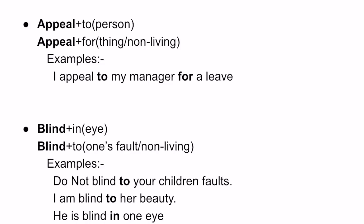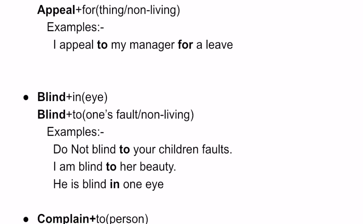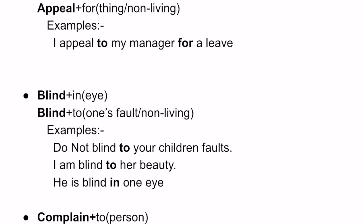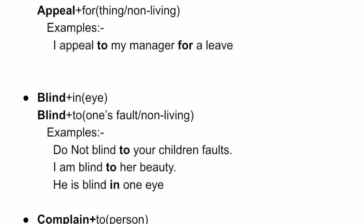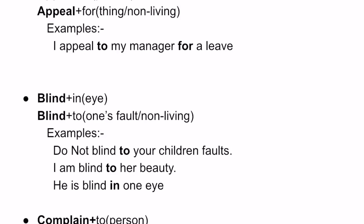Look at the examples. 'Do not be blind to your children's faults' — some parents support their children instead of scolding them, even when they do something wrong. They are blind to their children's faults, meaning those parents are unable to see that their children are committing mistakes, so we say 'blind to.' Another example: 'I am blind to her beauty' — that means I am very much attracted to her beauty. So, 'blind to.'